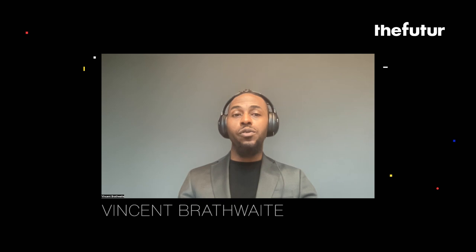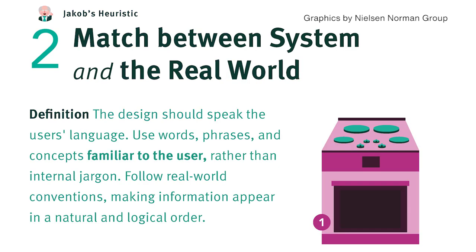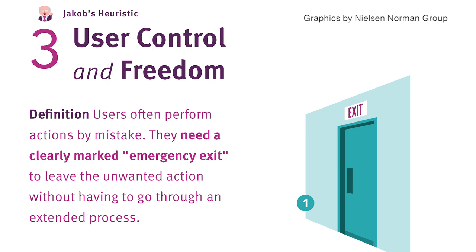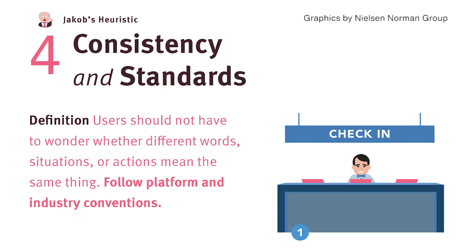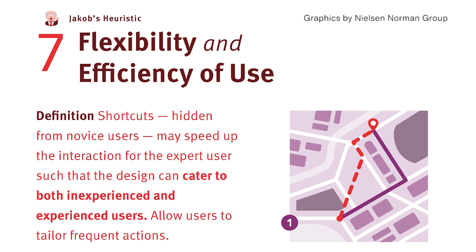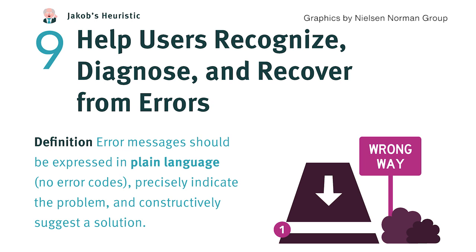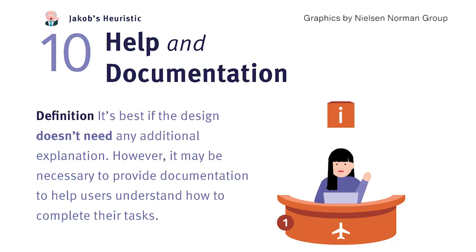And finally, there's the 10 Usability Heuristics created by the Nielsen Norman Group, also known as NNG, in 1994 and most recently updated a few years ago. They use the following criteria: one, visibility of system status; two, match between the design system and the real world; three, user control and freedom; four, consistency and standards; five, error prevention; six, recognition rather than recall; seven, flexibility and efficiency of use; eight, aesthetic and minimalist design; nine, help users recognize, diagnose, and recover from errors; and ten, help and documentation.